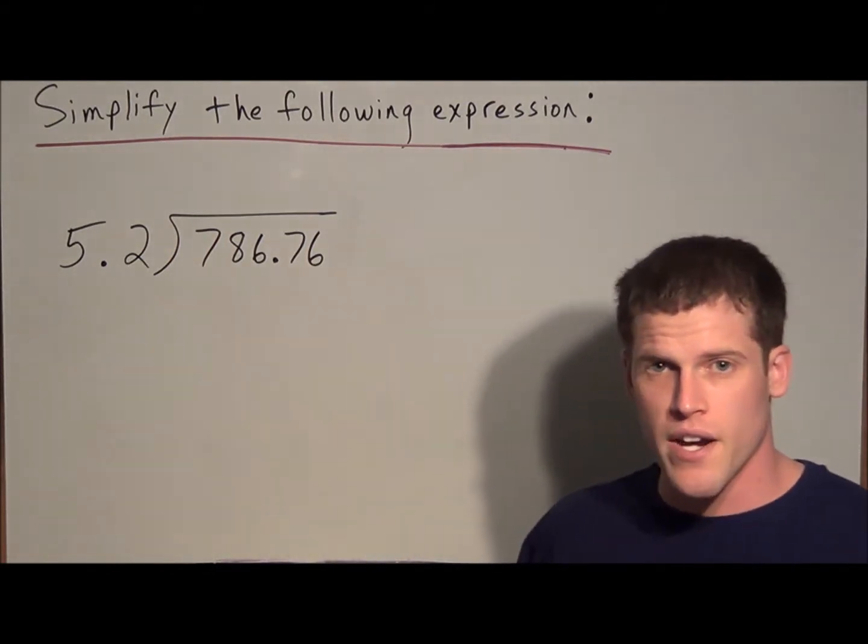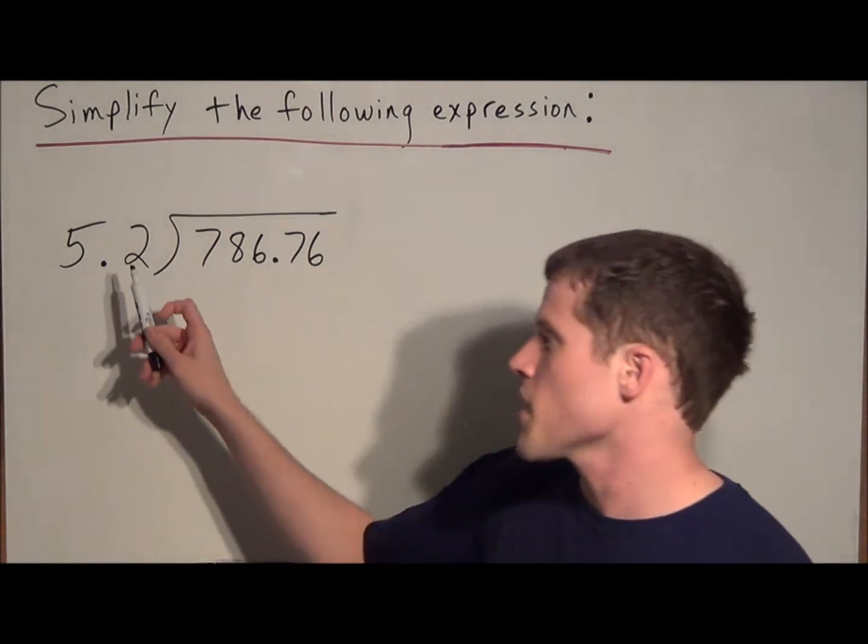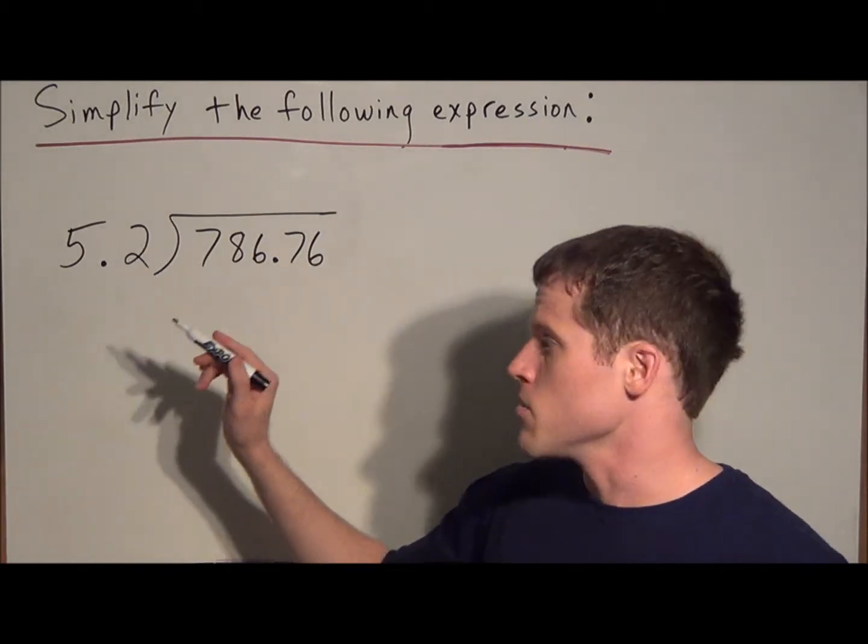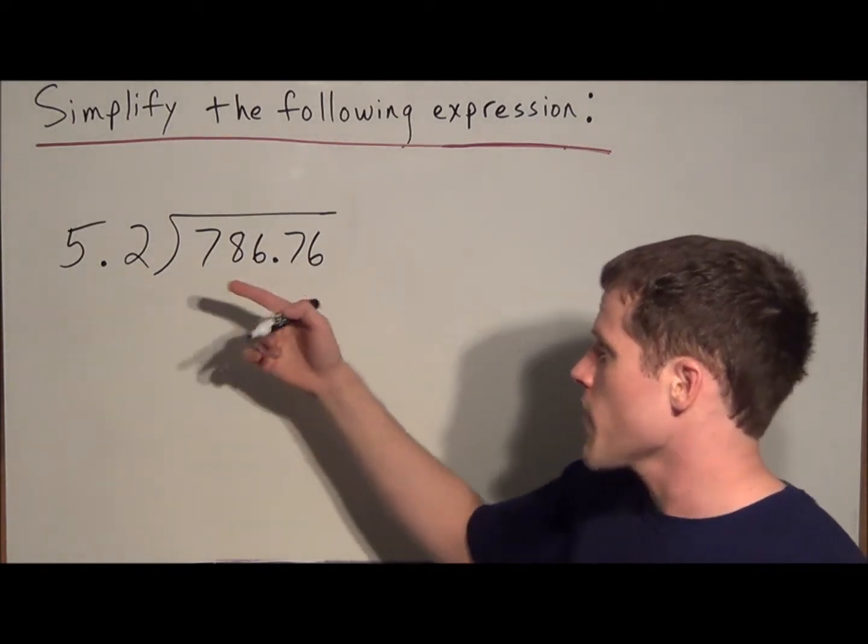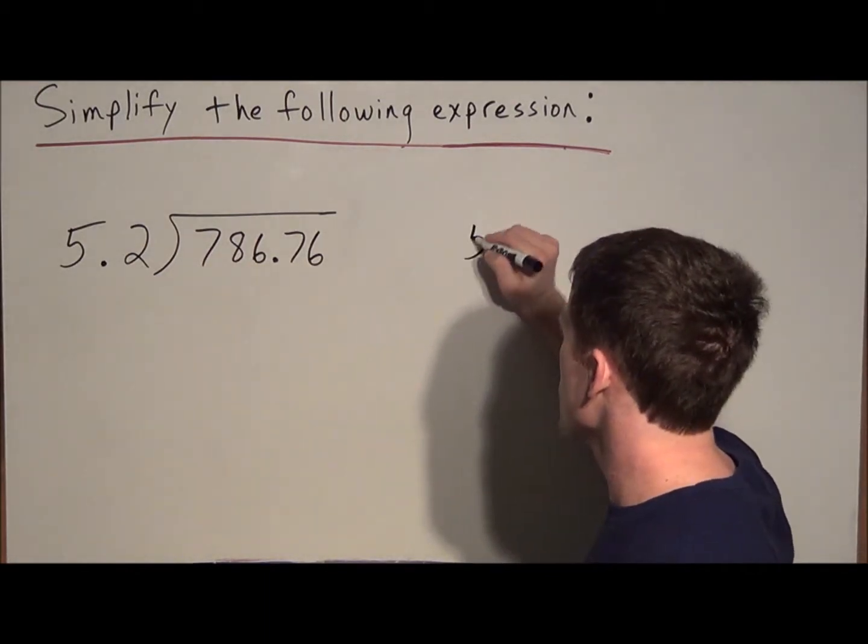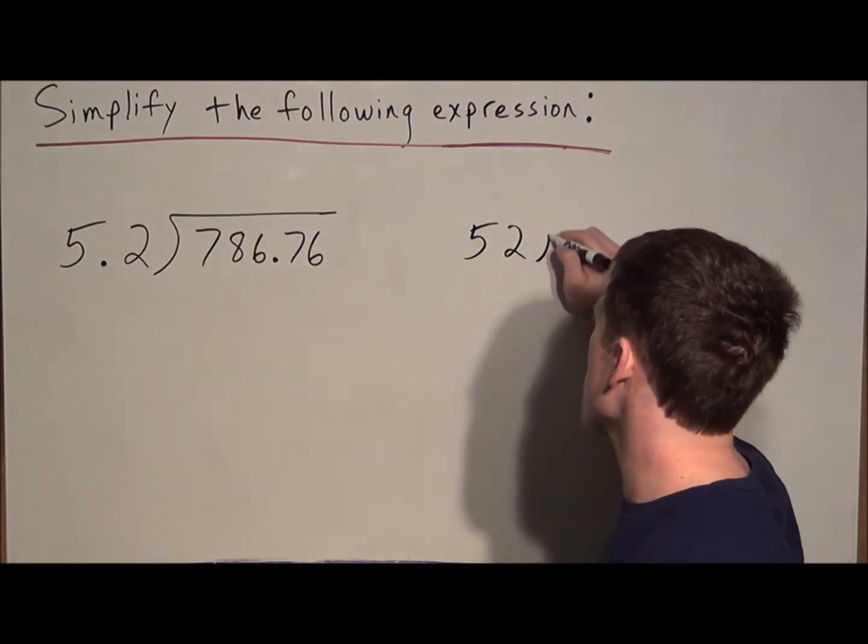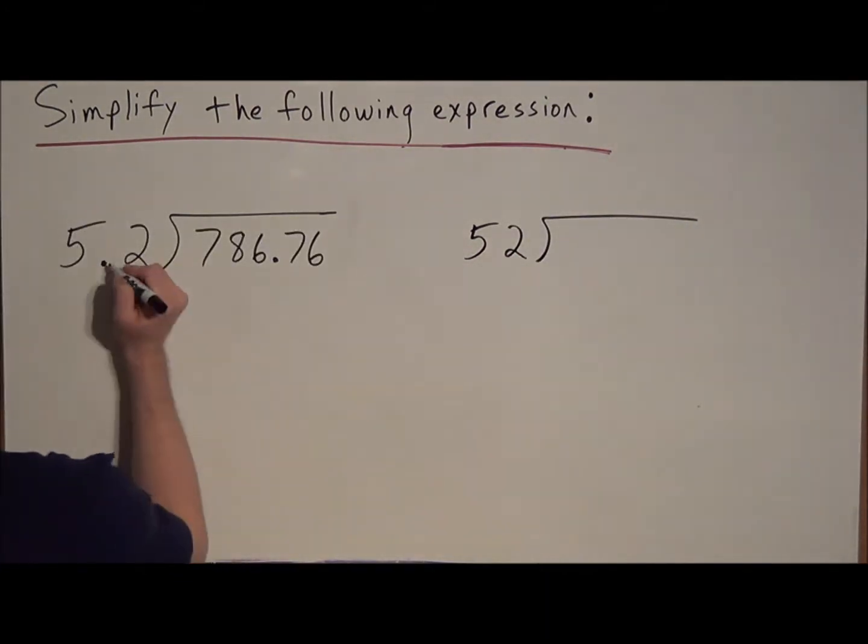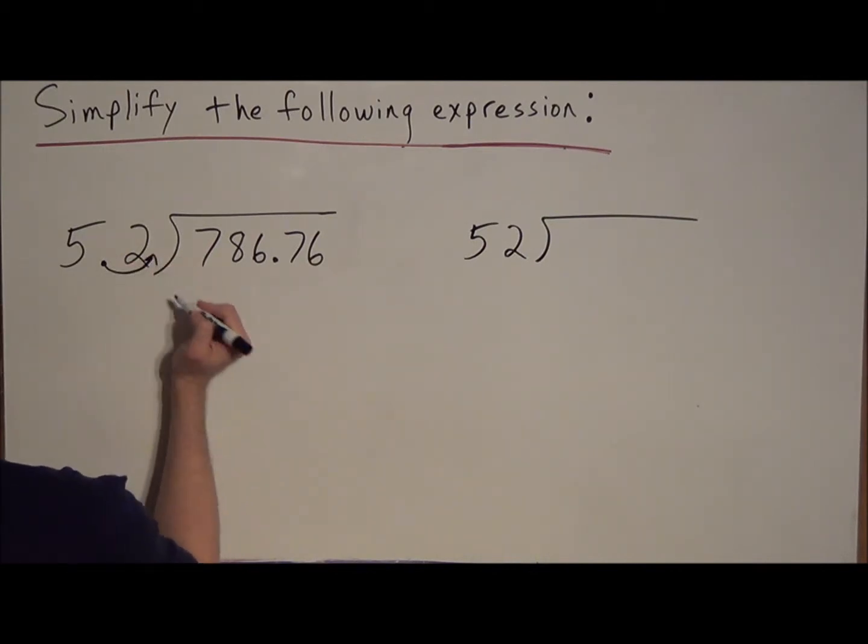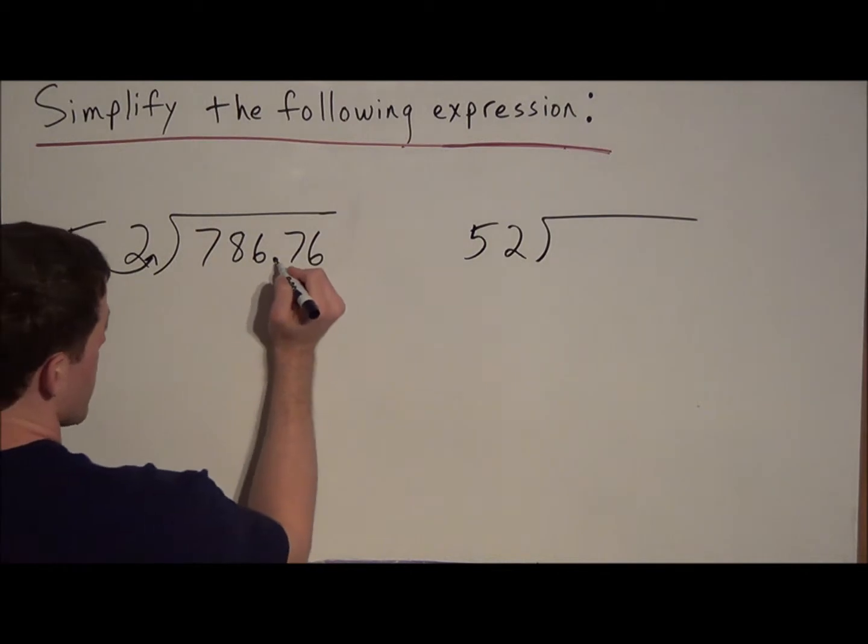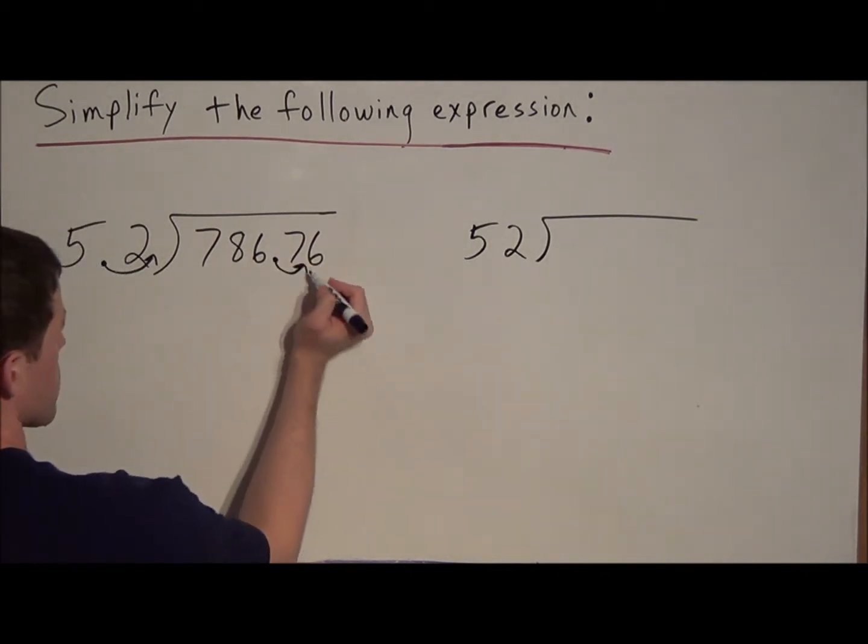So with dividing decimals, you want to make sure that the divisor on the outside is in the form of a whole number, and notice right away that we have 5.2. What we would like out there is 52, but the thing is, to transform 5.2 into 52, we need to move this decimal one place over to the right. So if we move this decimal one place over to the right, we have to move this one one place over to the right.